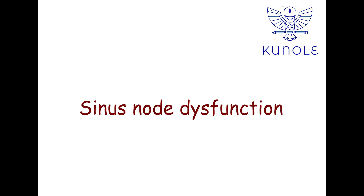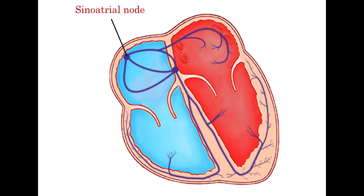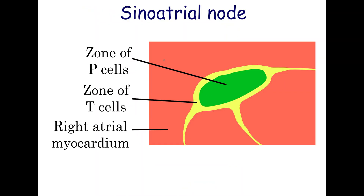We will discuss sinus node dysfunction. The sinoatrial node is located in the right atrium, laterally to the superior vena cava entrance. It is usually elliptical in shape. Two major types of cells are distinguished: perinuclear clear zone cells, also called P-cells,